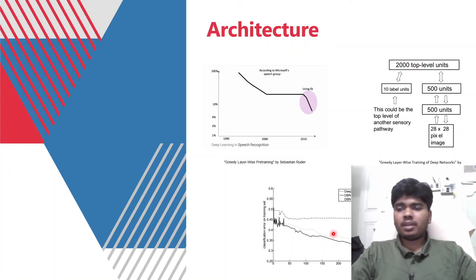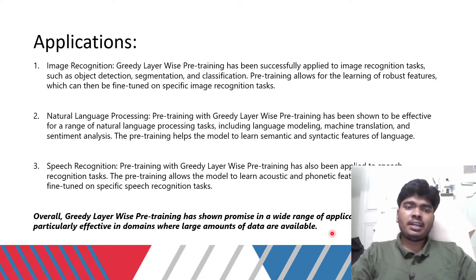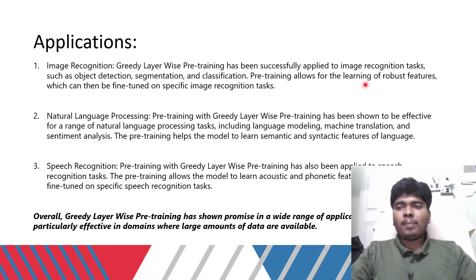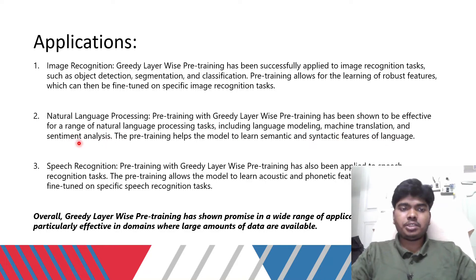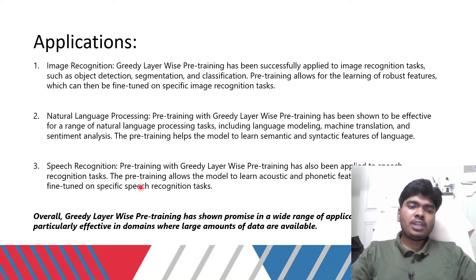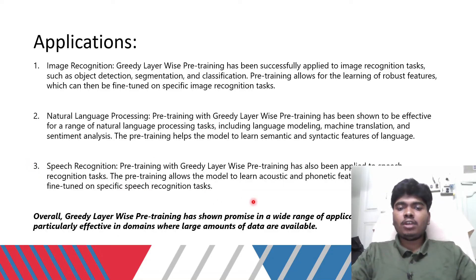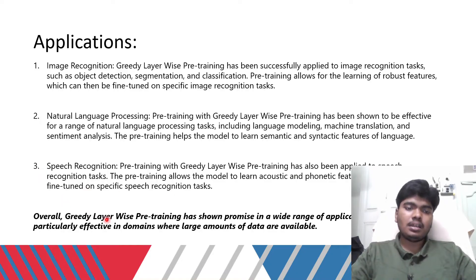The applications include image recognition — Greedy Layer-wise Pre-training has been successfully applied to object detection, segmentation, and classification, allowing learning of robust features. For NLP, it has been shown effective for language modeling, machine translation, and sentiment analysis, helping the model learn semantic and syntactic features of language. For speech recognition, it allows the model to learn acoustic and phonetic features, which can then be fine-tuned on specific tasks.